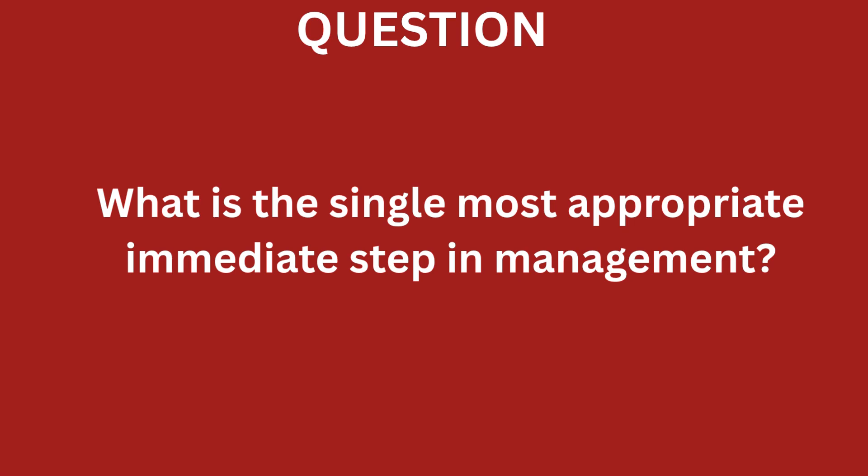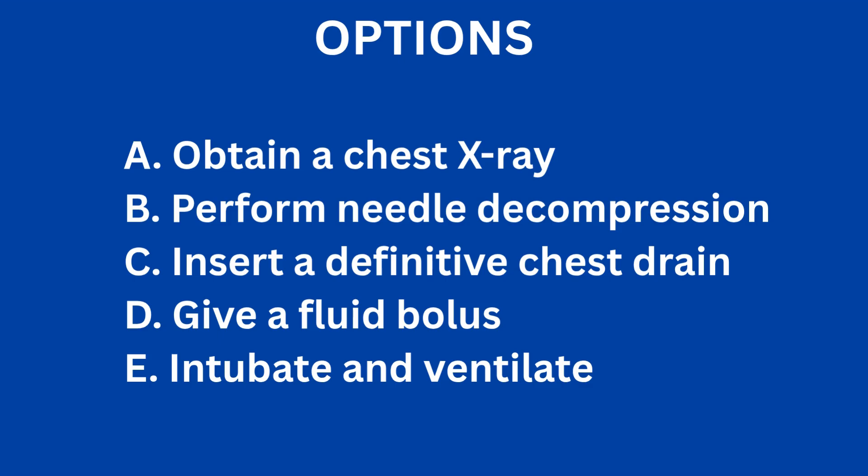Now let's look at the options. Option A — chest X-ray is a great diagnostic tool, but it's not immediate; it wastes time. Option C — a chest drain is the definitive treatment, but the keyword is 'immediate.' Option D — a fluid bolus is good but won't fix the underlying mechanical problem. Option E — intubation might make the tension pneumothorax worse. The only answer that is both life-saving and immediate is Option B: needle decompression. See how the keyword led us straight to the answer.